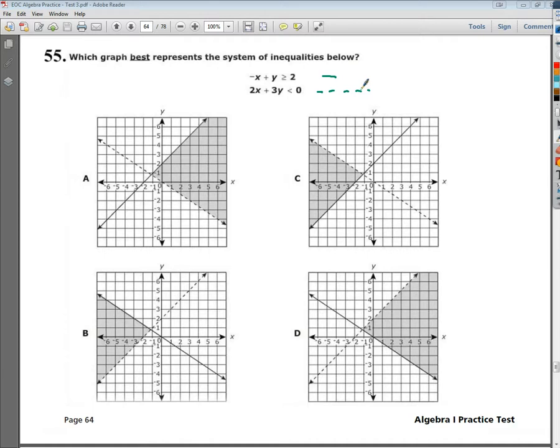You'll notice they also look exactly alike, pretty much, except for a few things. For instance, in A and C, you'll notice that your descending line would be your dotted line, whereas in B and D, your descending line, your negative slope, is a solid line. So that could be helpful.